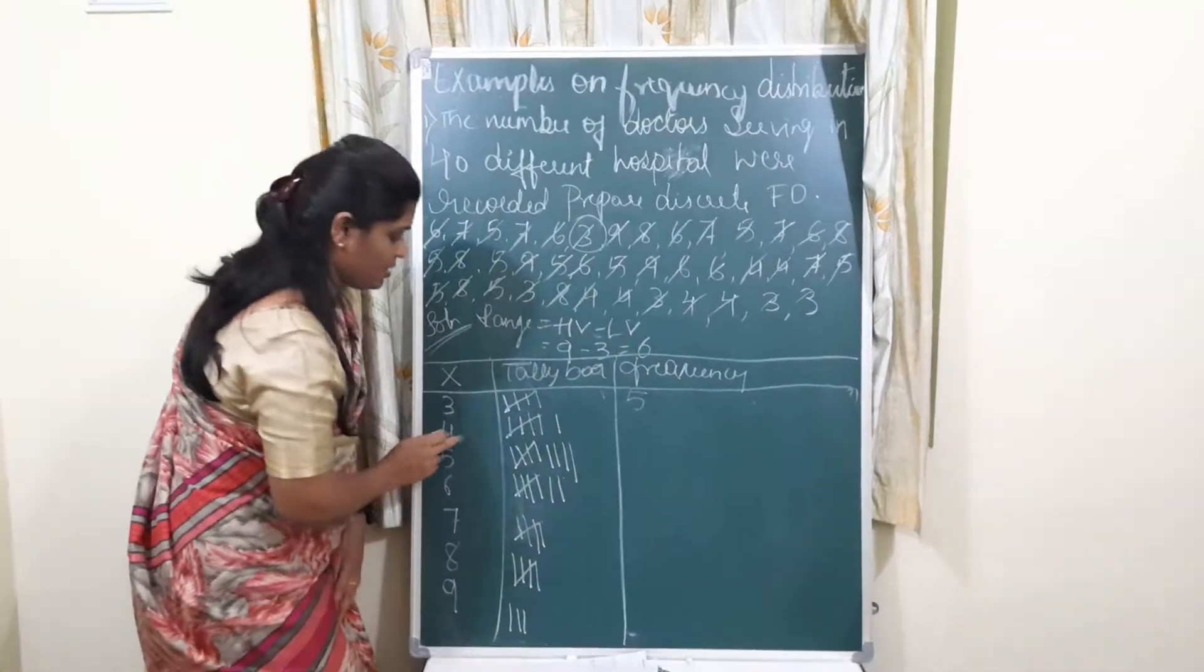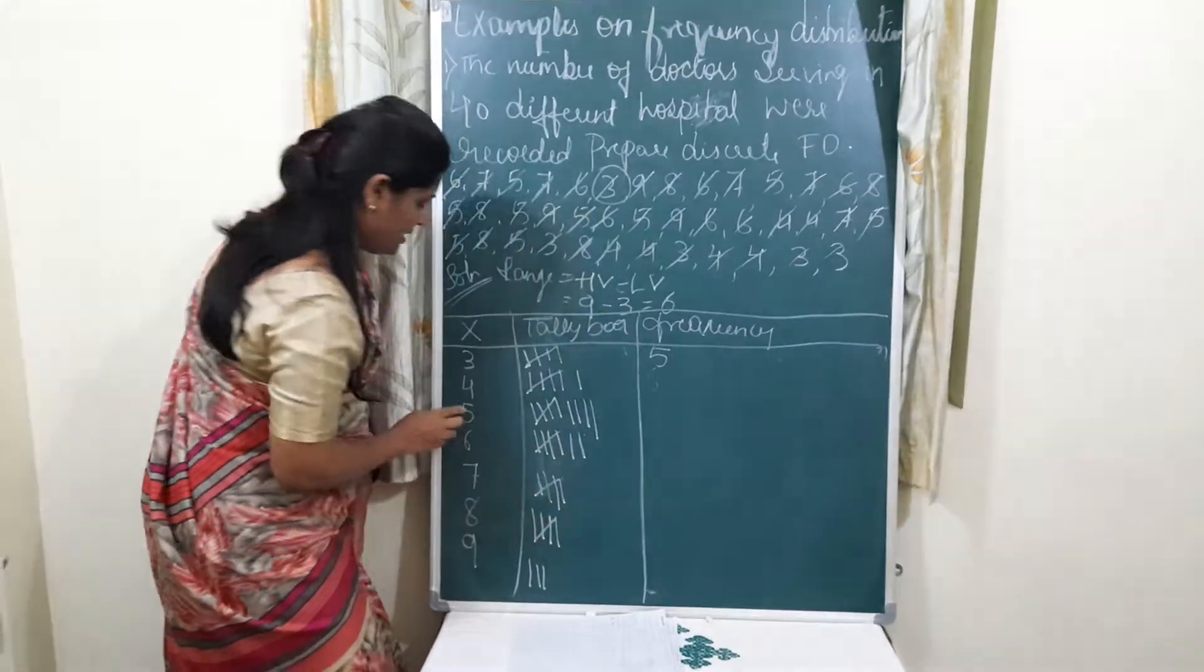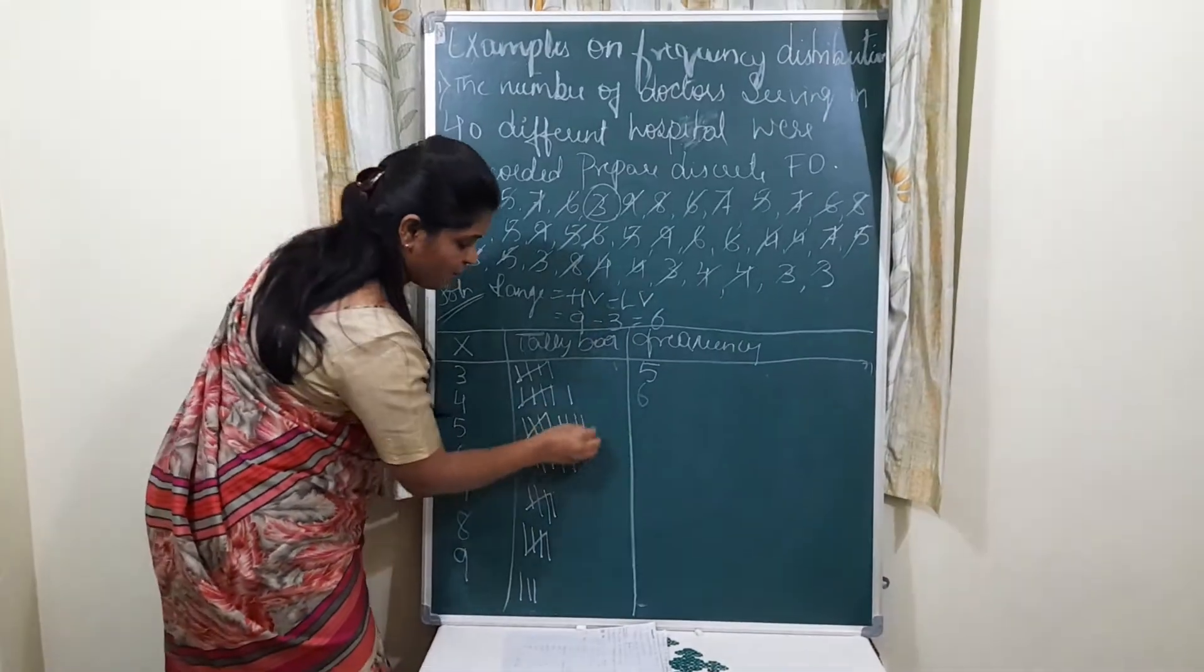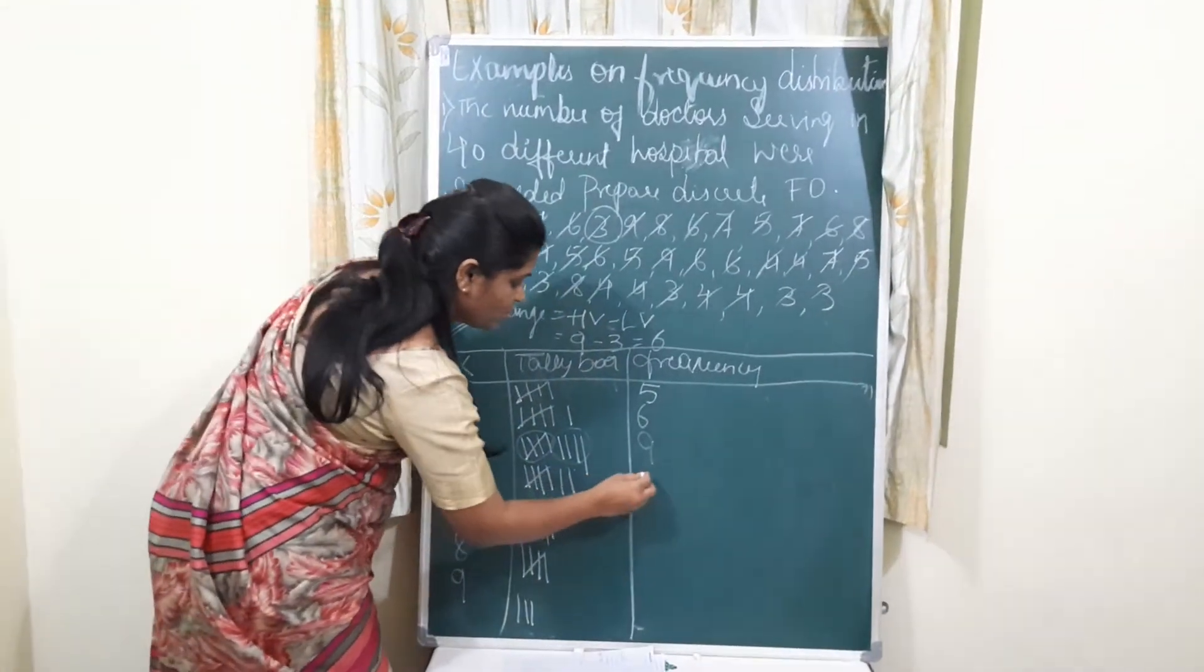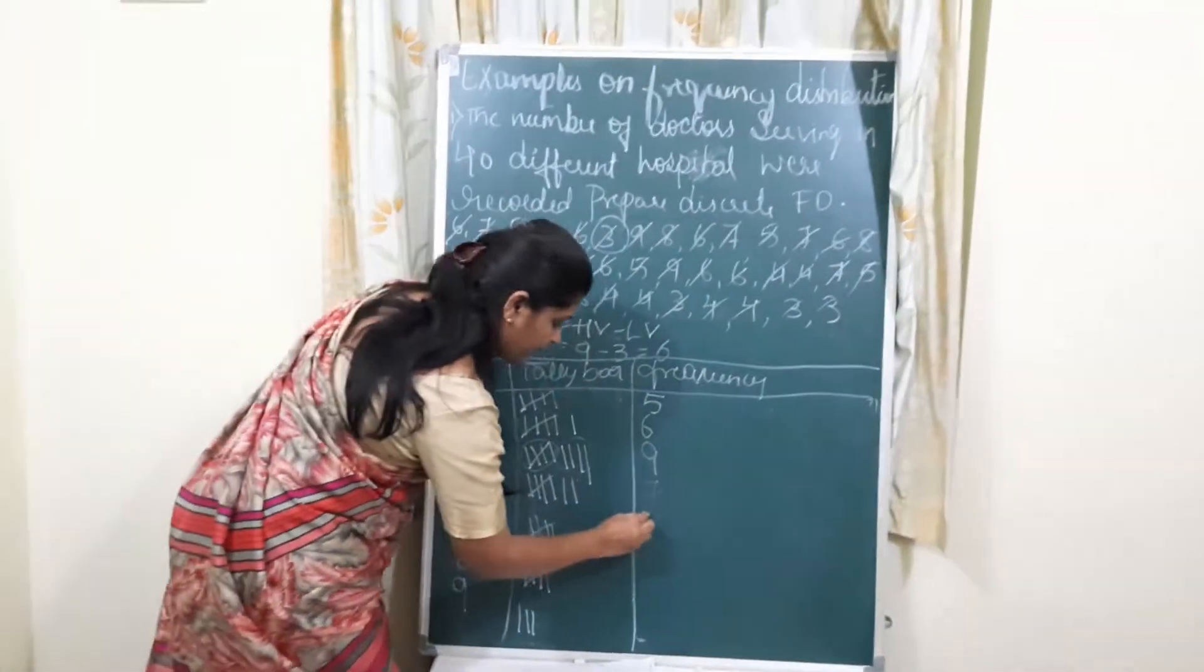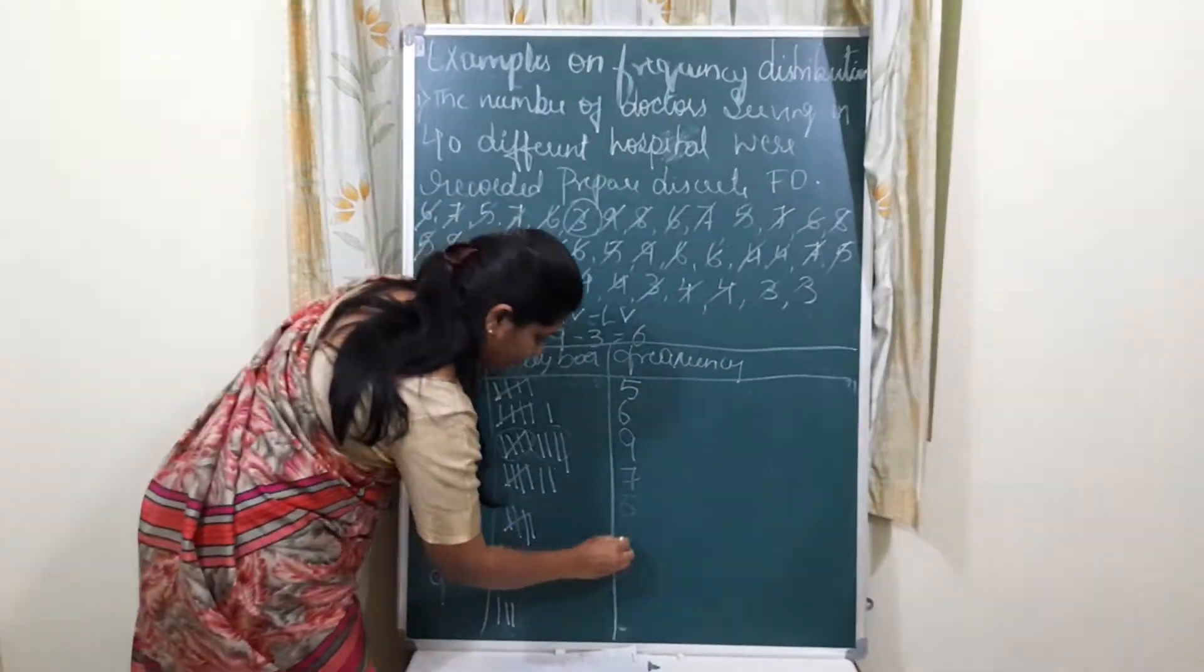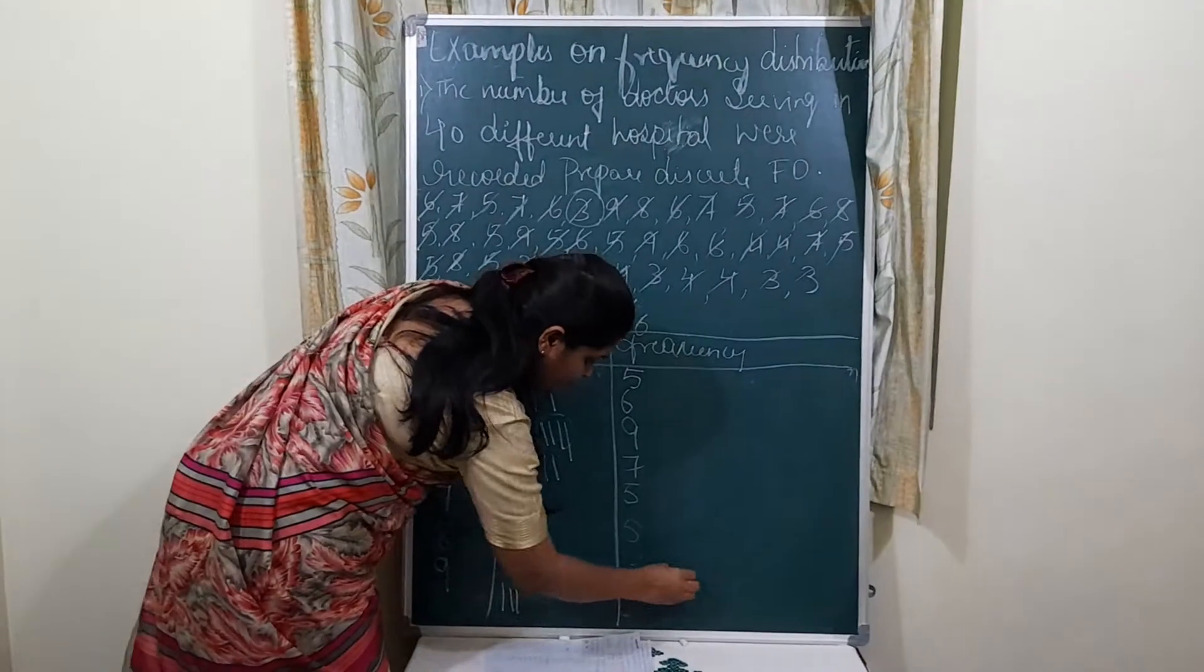4 appears 5 times. 5 appears 5 plus 4 equals 9 times. 6 appears 5 plus 2 equals 7 times. 7 appears 5 times. 8 appears 5 times. And 9 appears 3 times. This is what frequency repeated.